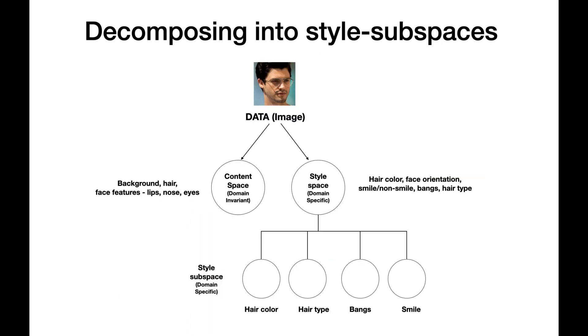Our idea is to simply decompose the style space into style subspaces. These subspaces are the factors of variation present in the data, and this could be hair color, hair type, age, smile, etc.